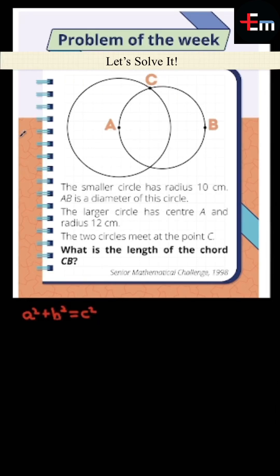UKMT problem of the week. Let's solve it. Here we have two circles intersecting at point C. We have a smaller radius of 10cm and a larger circle radius of 12.